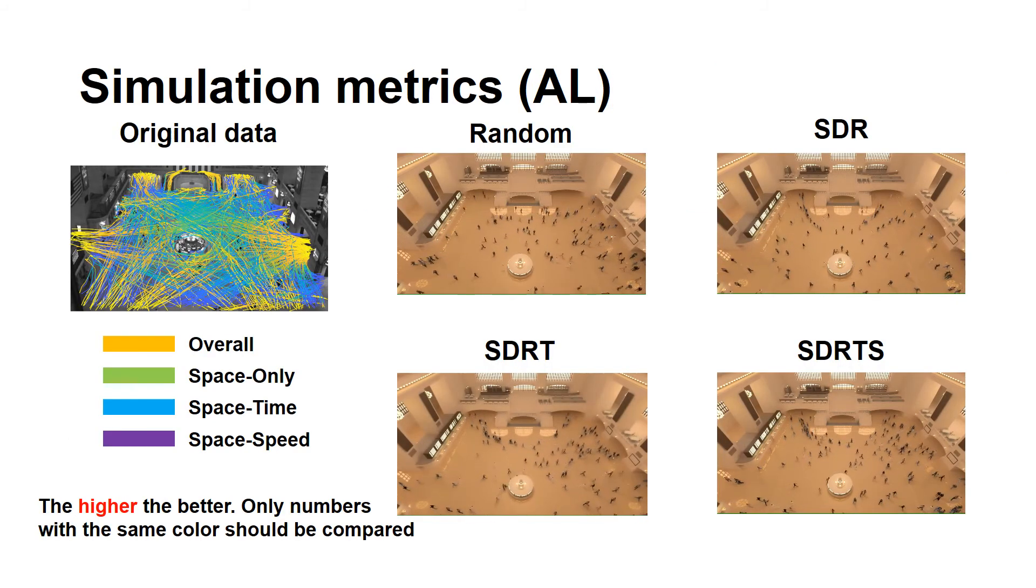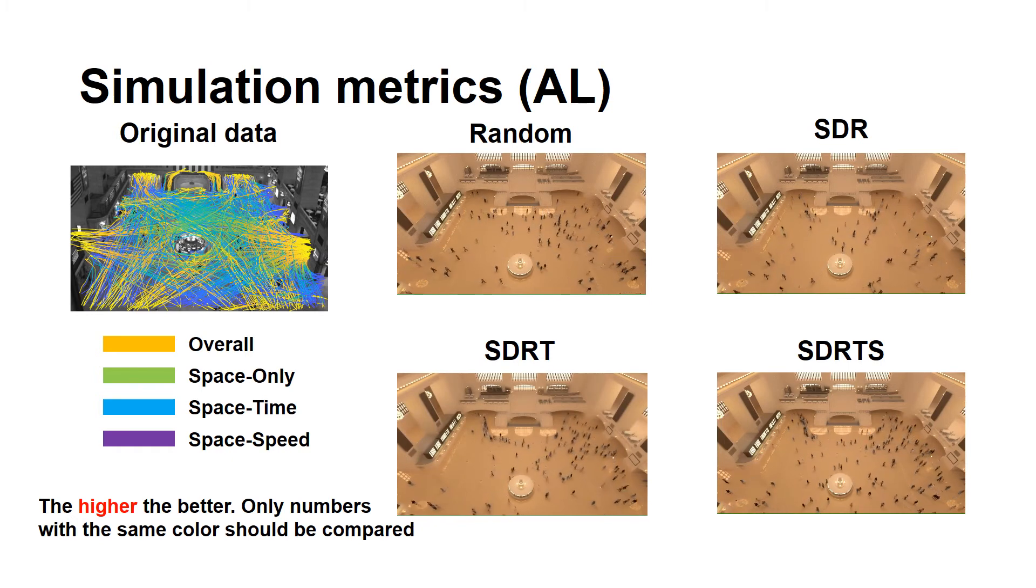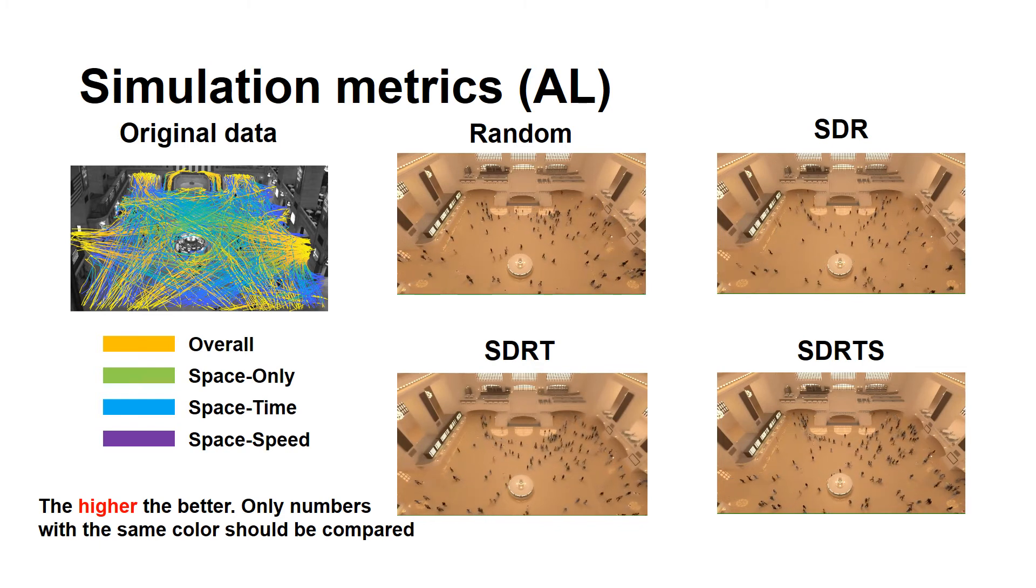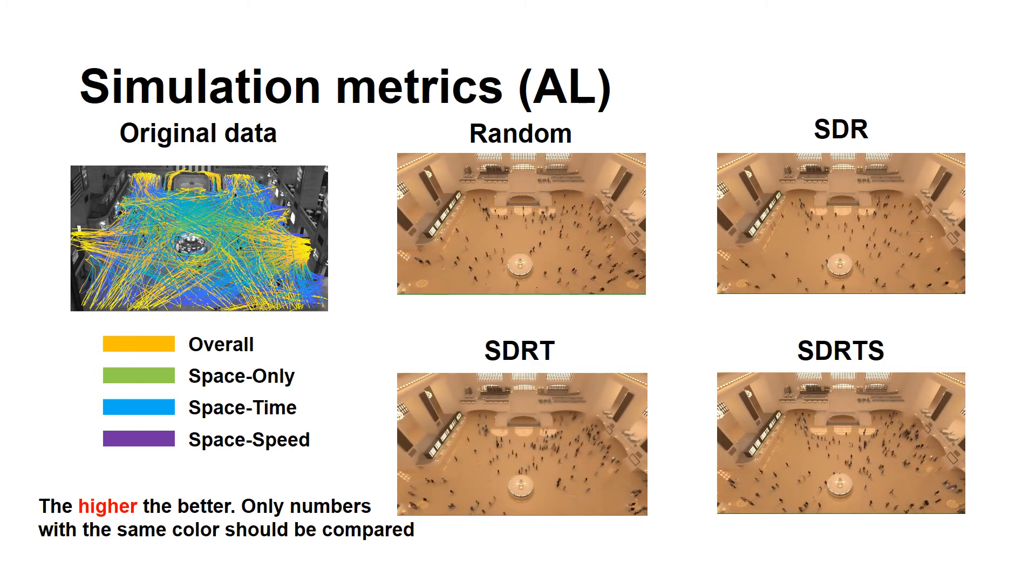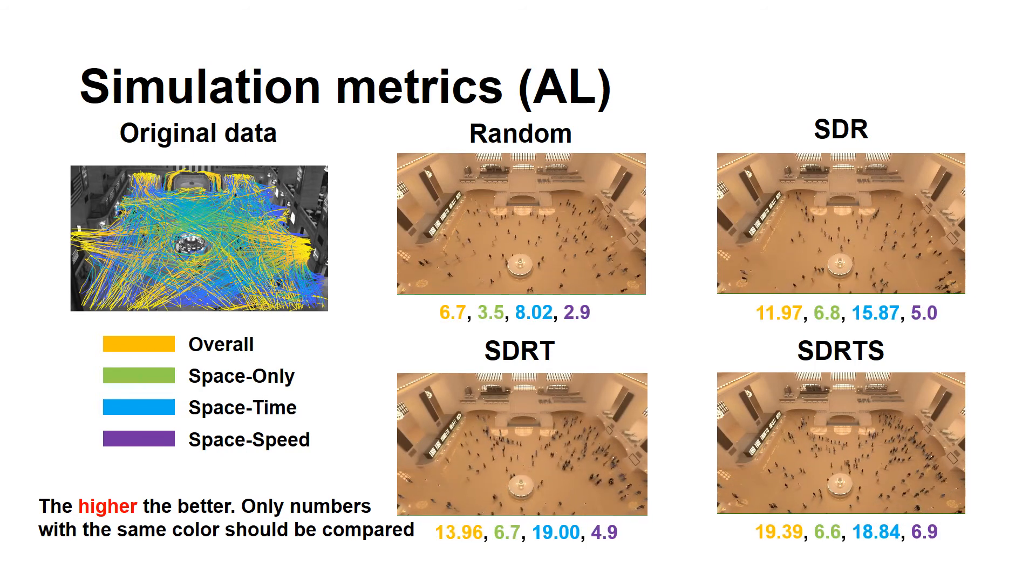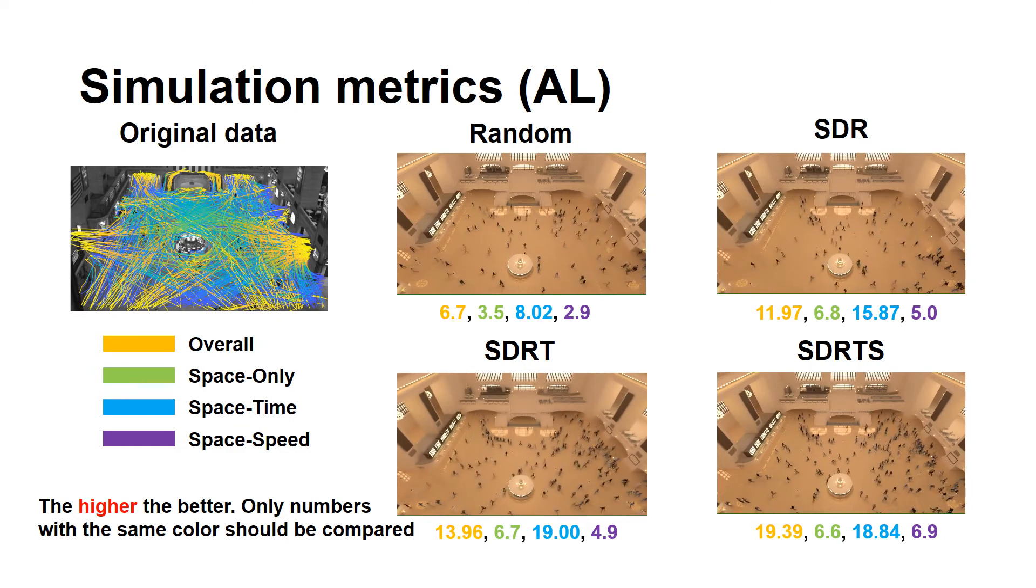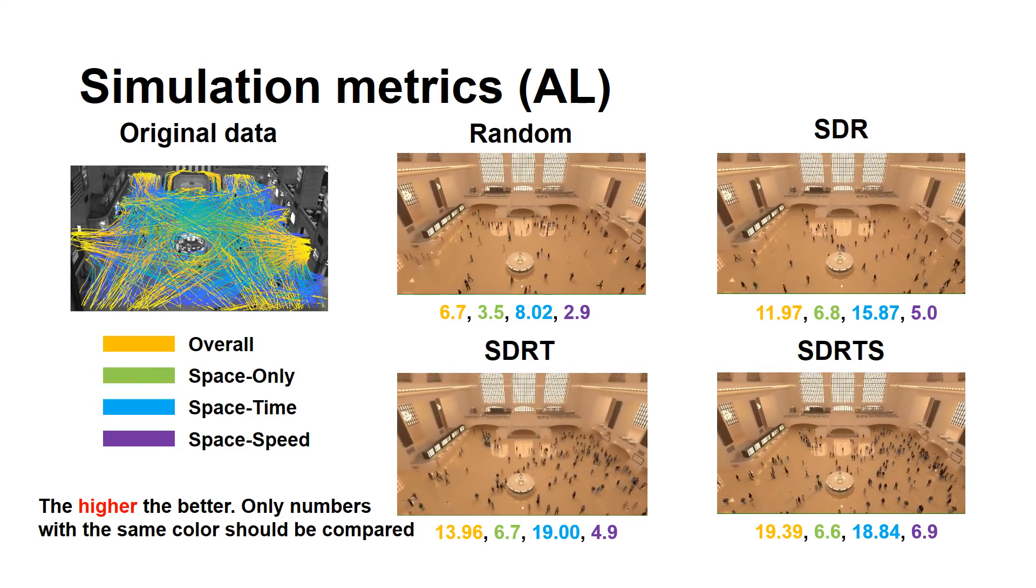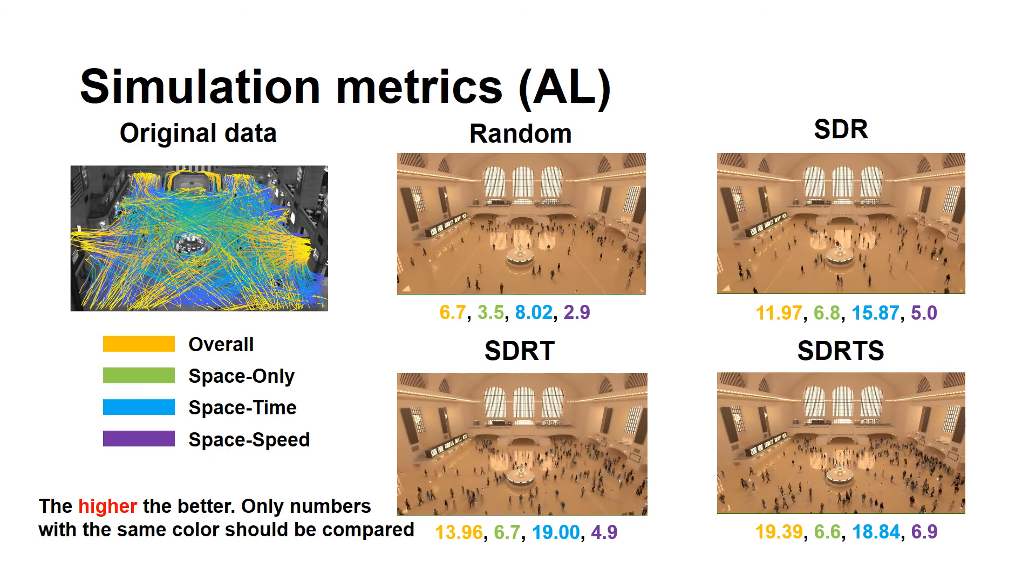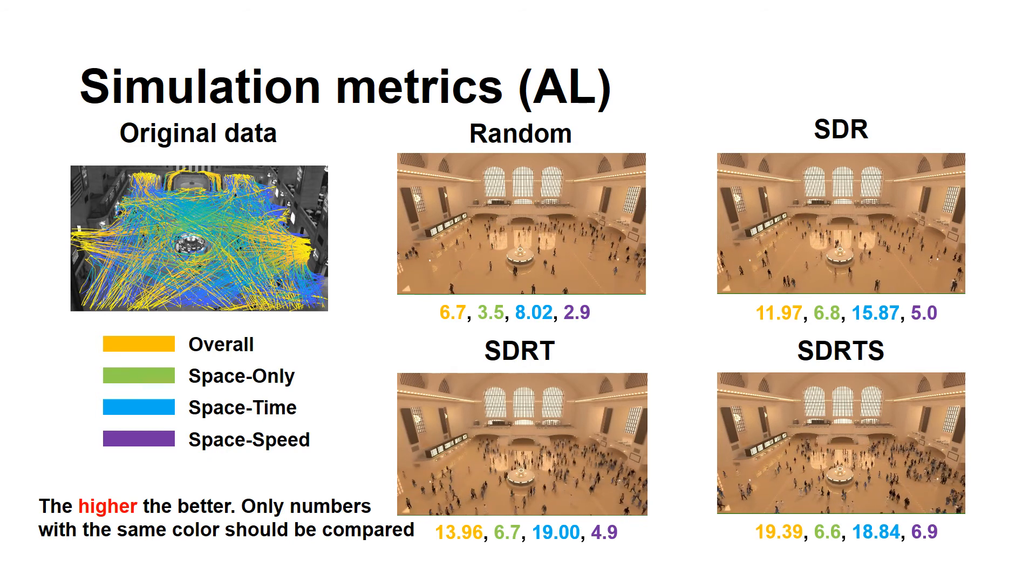We first propose various average likelihoods as metrics. Different average likelihoods, or AL metrics, evaluate different aspects of the simulation. We show the results on the overall performance, or dimension specific performance, such as space only, space time and space speed. Here only numbers in the same color should be compared. The higher the value is, the more similar the simulation is to the real data under that metric. Overall as expected, random achieves the lowest score on every test. SDRTS achieves the best. It is because it is a fully informed setting. More detailed analysis can be found in the paper.